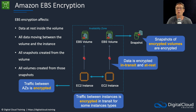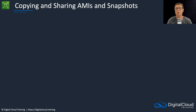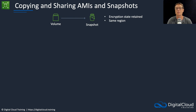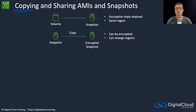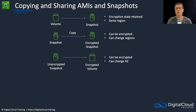If you copy a volume, however, you can change the encryption status. Looking at the different options for copying and sharing Amazon Machine Images and snapshots: when you create a snapshot from a volume, the encryption status is retained and it stays in the same region. If you copy and encrypt a snapshot, that's how you can change the encryption status, and you can also change the region. You can also take an unencrypted snapshot, create an encrypted volume, and change the availability zone in the process.